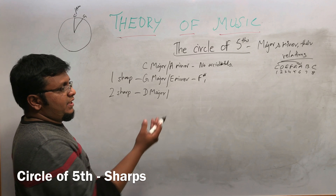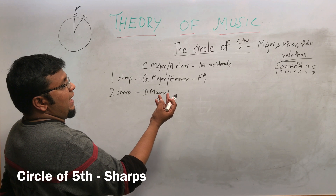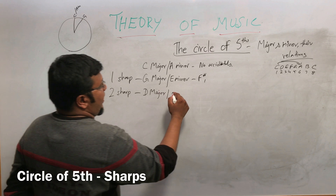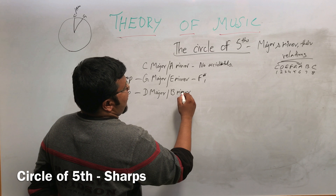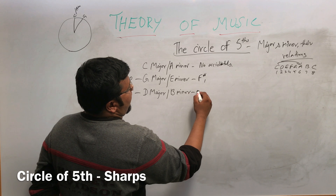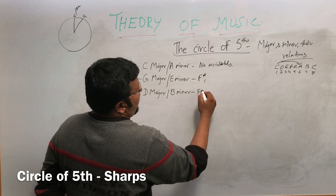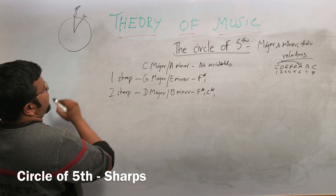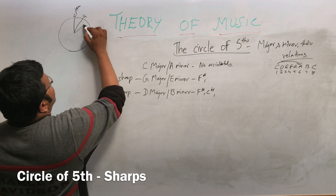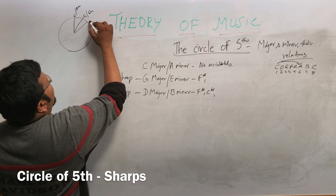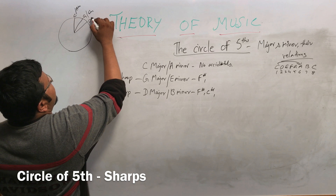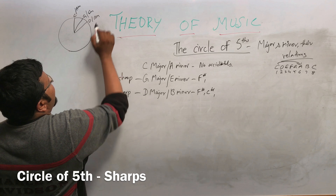From D major, the notes are D, E, F-sharp, G, A, B. The sixth note of D major scale gives us the relative minor. The notes include F-sharp and C-sharp. So D major relates to B minor.